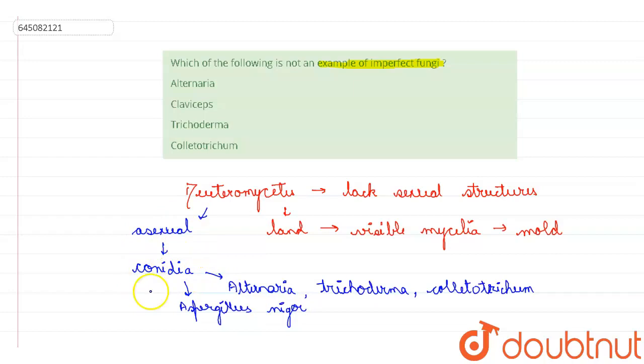Now if you look at the options which are given, the first option is Alternaria, and I told you Alternaria is the example of the Deuteromycetes, so this is not correct. Now if you talk about Claviceps, this Claviceps does not belong to Deuteromycetes. In fact, they belong to Ascomycetes.